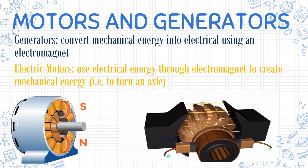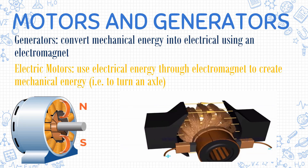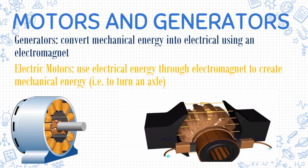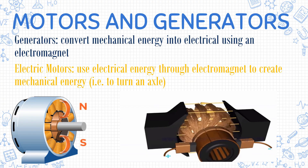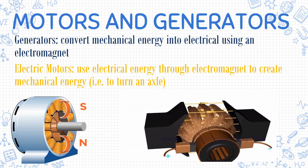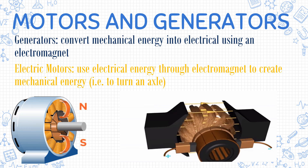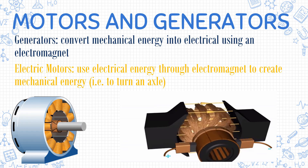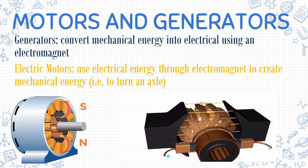What is the difference between motors and generators? Generators convert mechanical energy into electrical energy using an electromagnet. On the other hand, electric motors use electrical energy through an electromagnet to create mechanical energy.